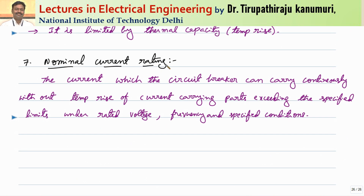The nominal current rating is the continuous current the circuit breaker can carry without the temperature rise of current-carrying parts exceeding specified limits, under rated voltage, frequency, and other specified operating conditions. This represents the continuous current rating and is expressed as an RMS value in kilo amperes.